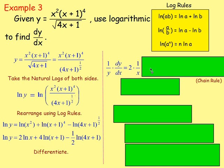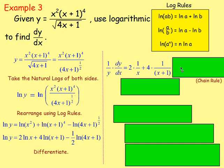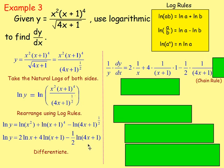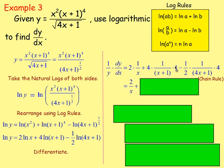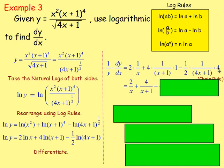Differentiating −(1/2)·ln(4x+1): ln(something) goes to 1/something, so we get 1/(4x+1), and we multiply by the derivative of (4x+1) which is 4 — that's the chain rule. So −(1/2) × (1/(4x+1)) × 4. Tidying up: 2/x + 4/(x+1) − 2/(4x+1). Multiply both sides by y to get dy/dx = y × [2/x + 4/(x+1) − 2/(4x+1)].